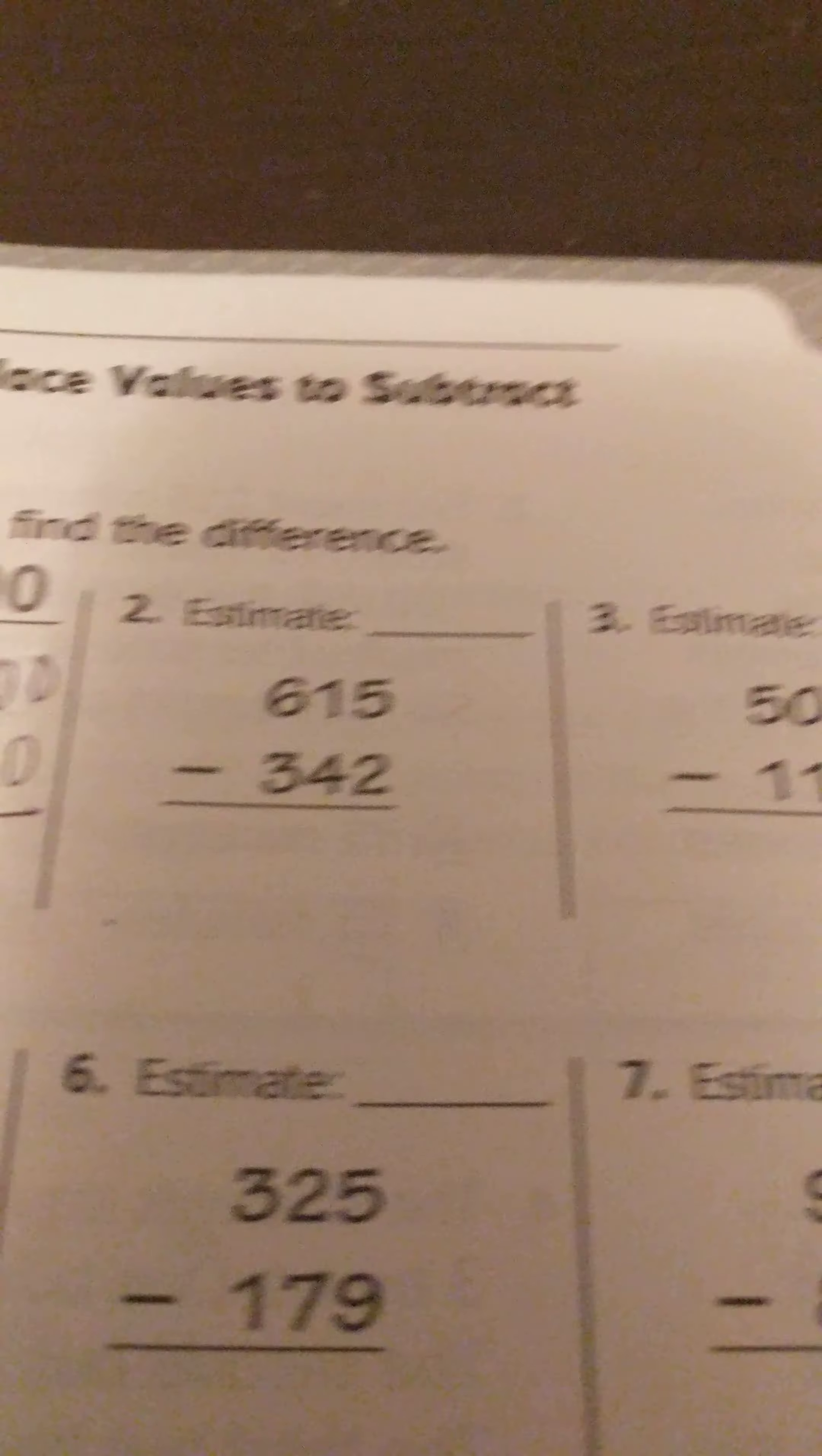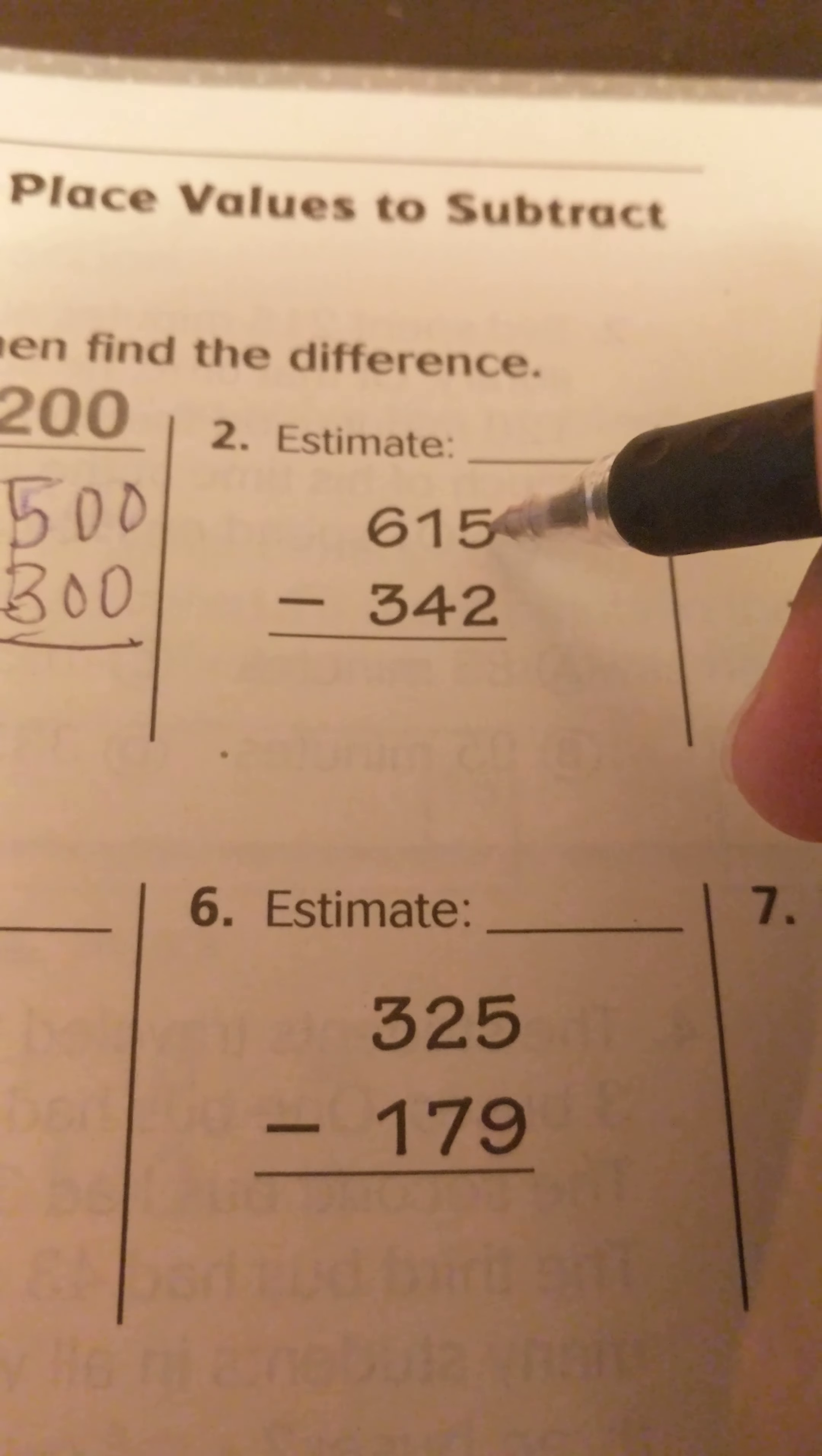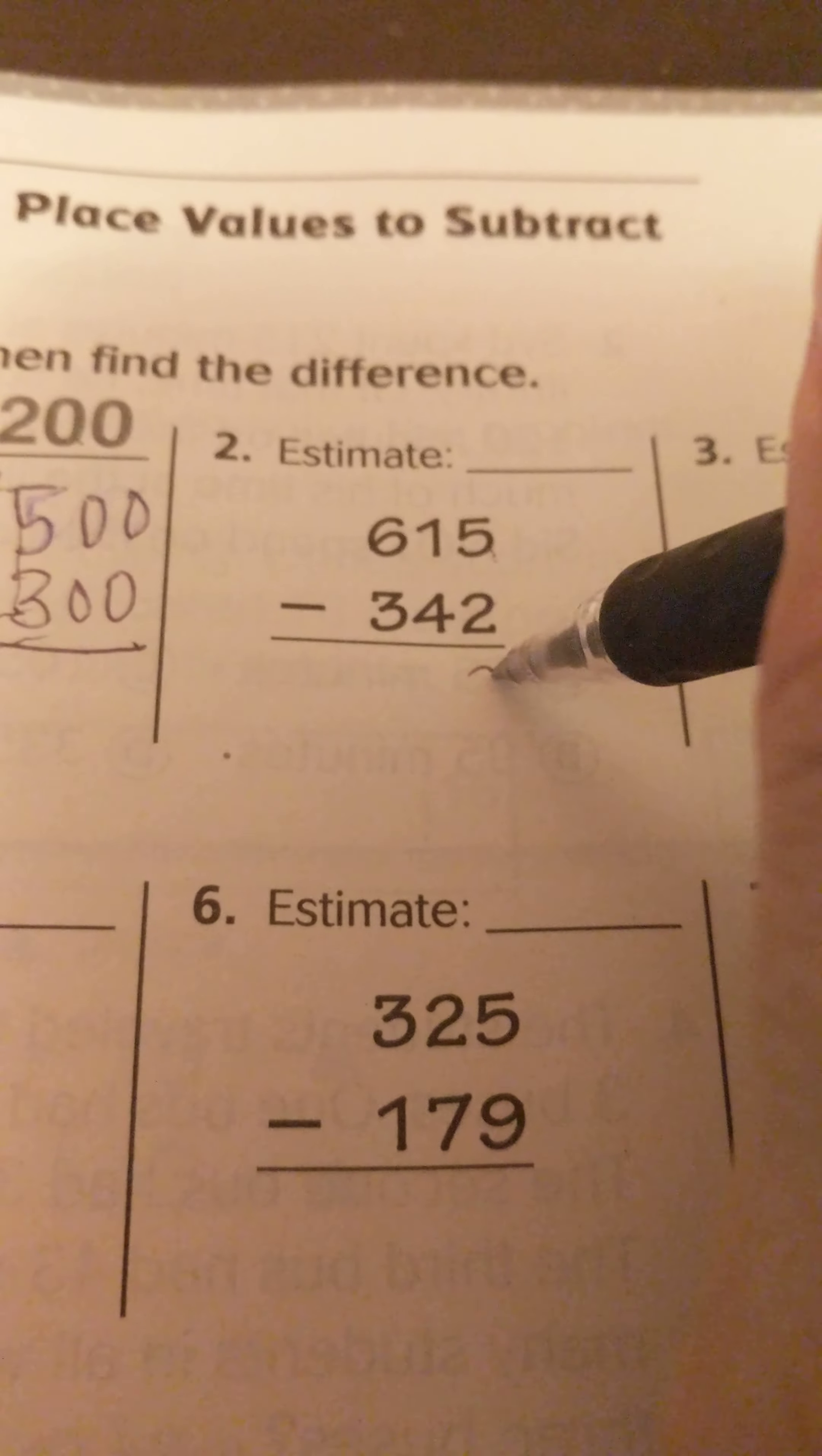I'll show you another example combining place values. This one's going to be slightly different. So as you see, unlike the first one where you had to regroup the ones, the ones do not need to be regrouped here because you have a larger number on top. So I'll come back to the estimating. I forgot about that but I'll come back to that since I'm already talking about this. 5 minus 2 is 3.